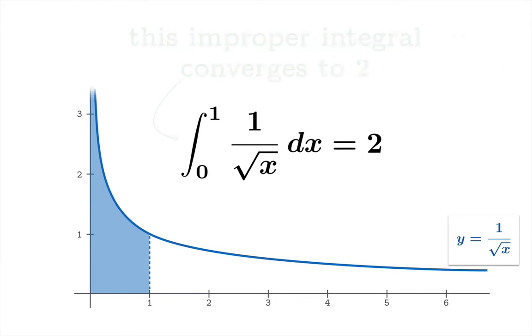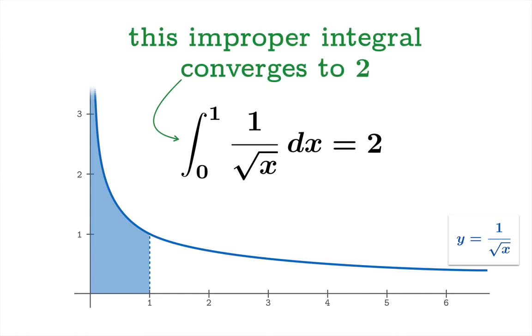And so we would say that this improper integral converges to the value 2 and we'll note that even though this region is infinitely tall it has finite area. In fact we calculate that area to be equal to 2.